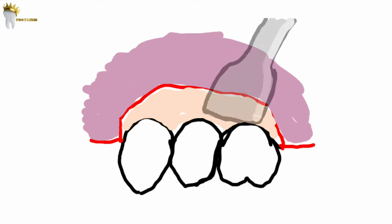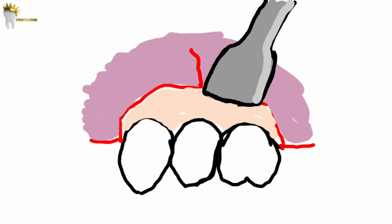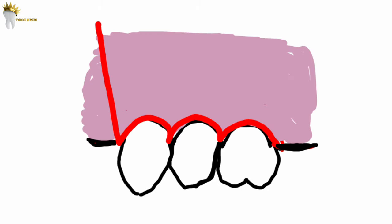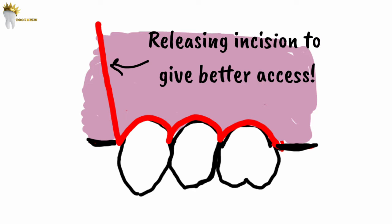The third complication of poor flap design is flap tearing. If the flap gives insufficient access and we retract it too much, it can tear. We might think a long incision requires more healing time, but actually a long incision heals just as quickly as a short one. It's important that we make the incision in such a way that it gives us enough access for surgery, so we don't tear the flap or need to lengthen it later.